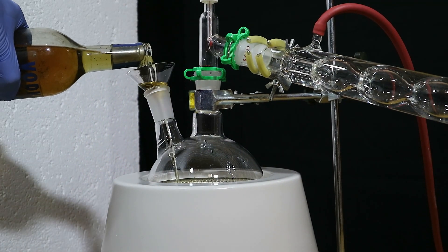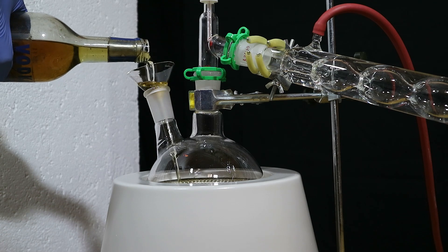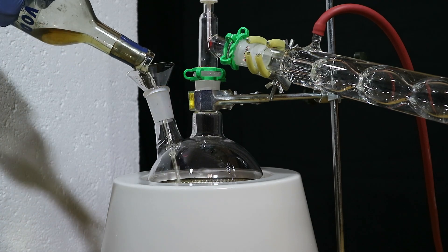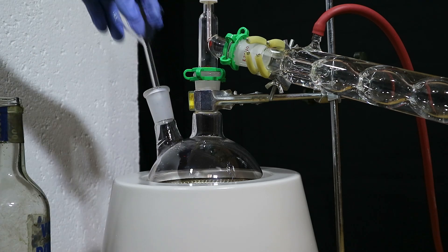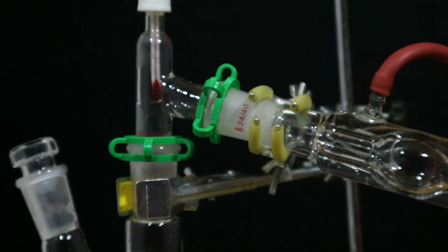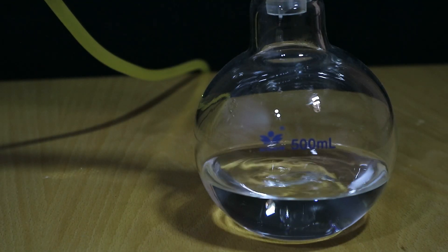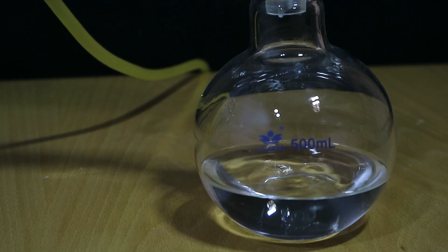The first distillation we're going to do without a fractionating column since we are mainly concerned with removing the heavy organic molecules that add the color and a lot of the aroma that I can sense and you can't. Even without the column this will still increase the concentration of ethanol significantly but we are not interested in measuring it or anything like that yet.